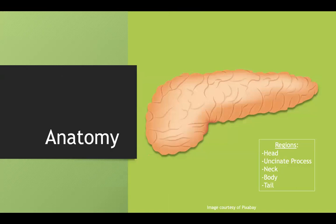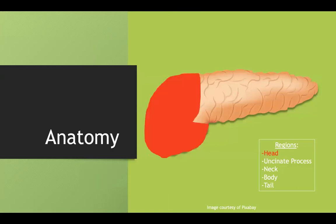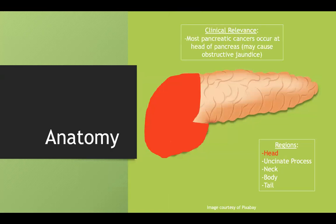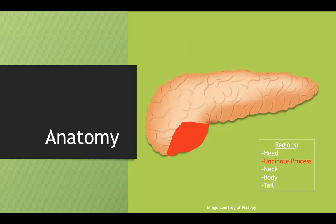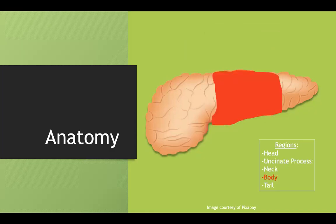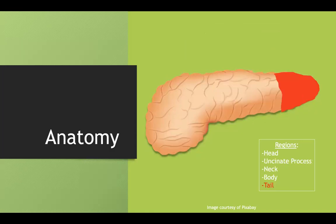Starting with anatomy of the pancreas, I'll go over some of the regions. Highlighted in red is the head of the pancreas. The main thing to know about the head is that a lot of pancreatic cancers arise in this region, and this can block the pancreatic duct and cause obstructive jaundice, as well as the bile duct. The uncinate process is part of the head. You also have the neck, body, and tail of the pancreas.